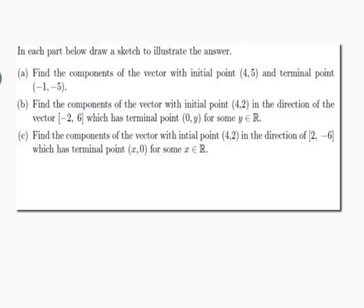The question is, in each part below, draw a sketch to illustrate the answer. Part a: find the components of the vector with initial point. Part b: find the components of the vector with initial point in the direction of the vector. Part c: find the components of the vector with initial point in the direction of. Well, it says to draw a sketch, so I think I'll draw it first to help me figure it out.